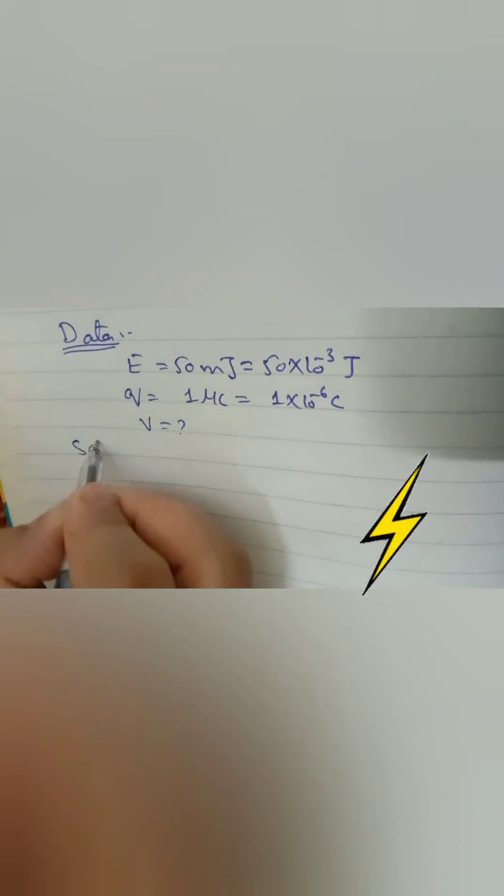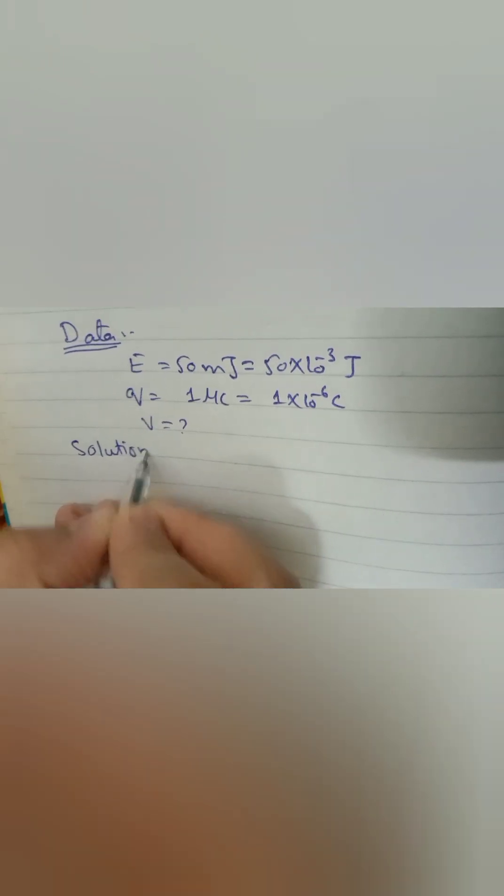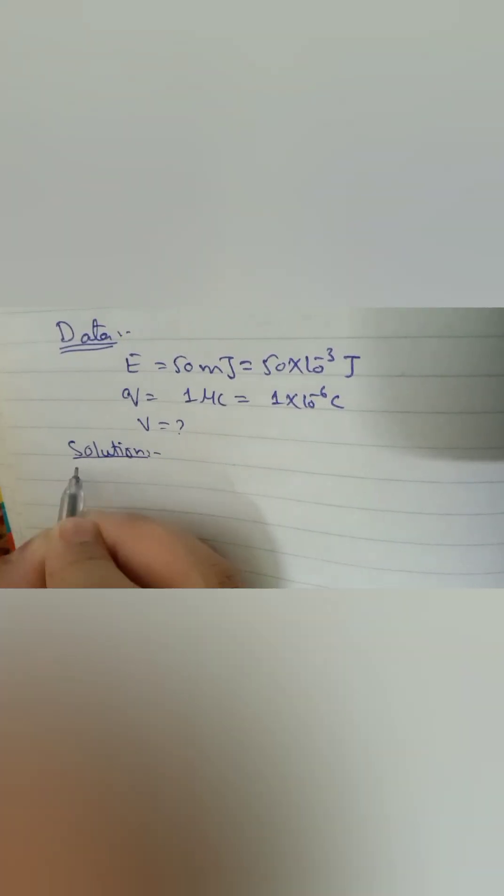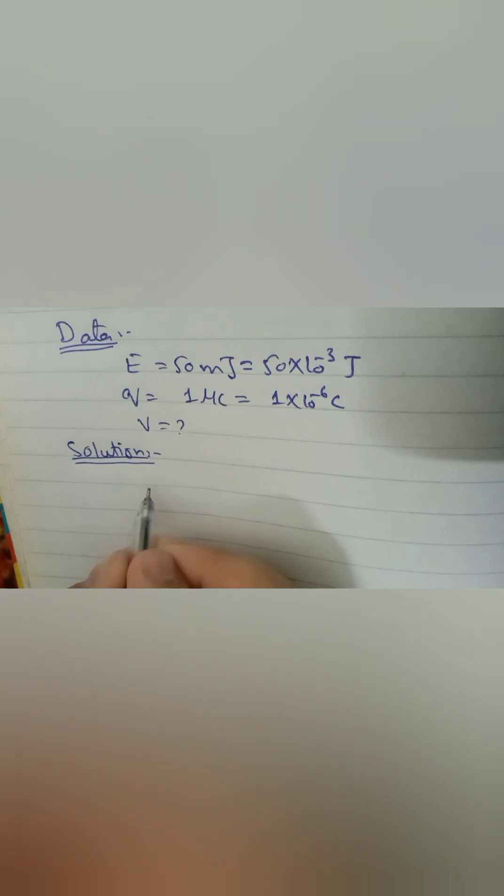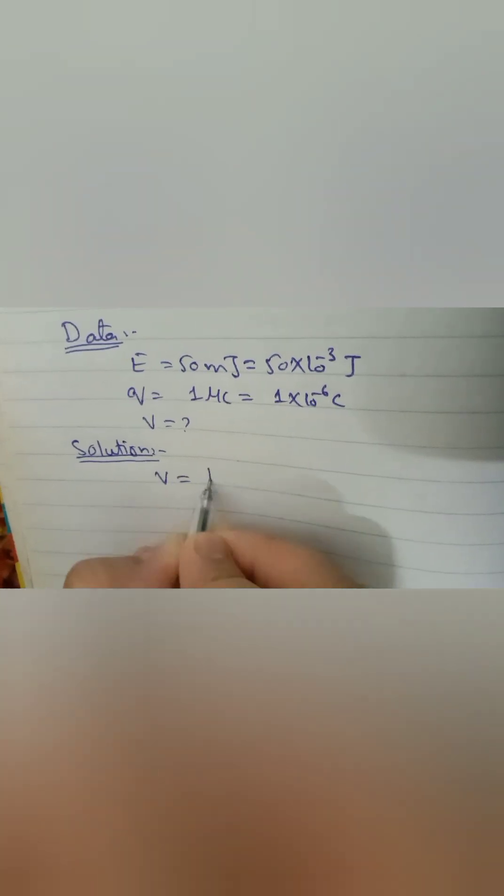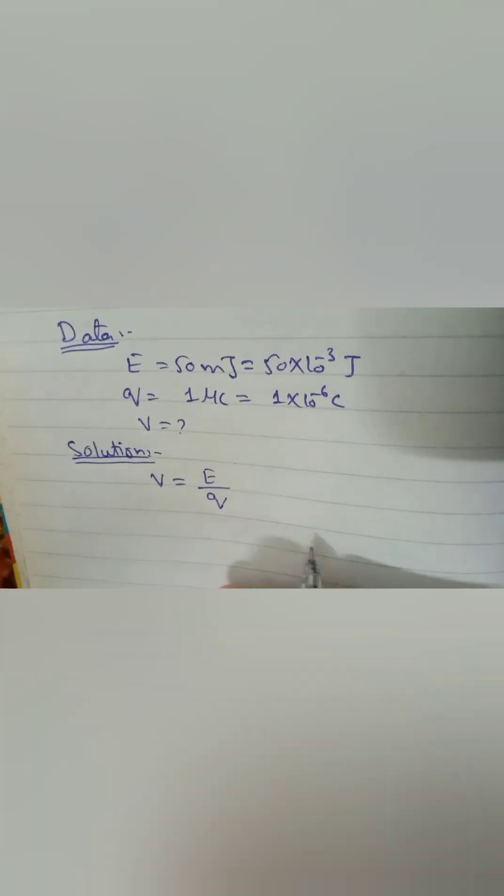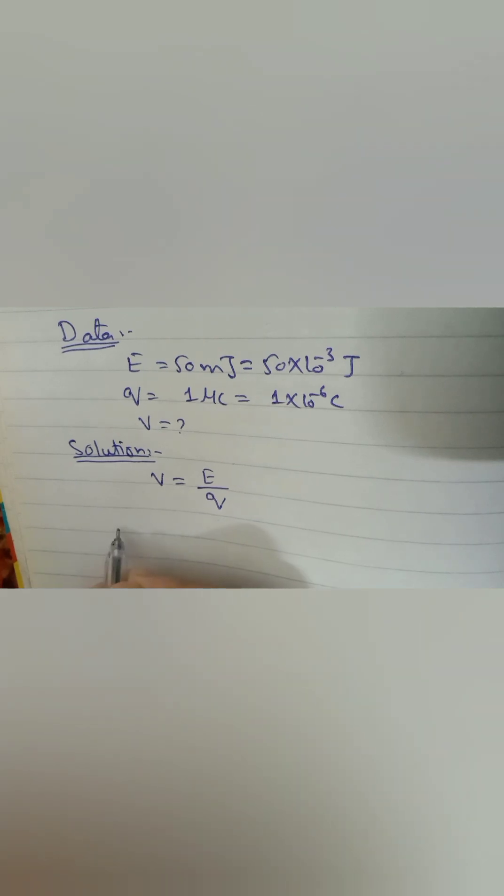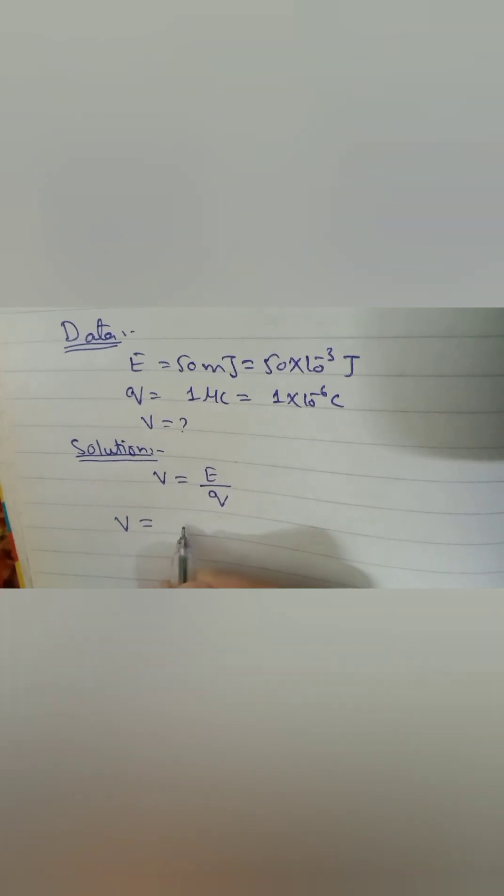We need to find the potential difference. We know the basic equation of voltage and energy is V is equal to energy divided by q. Just put in the values in this formula and you will get the answer.